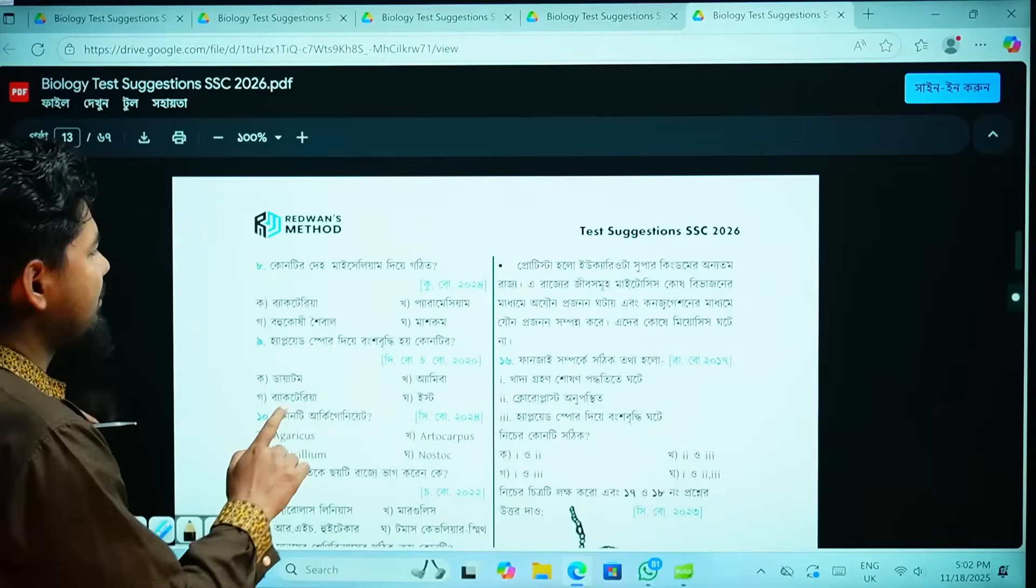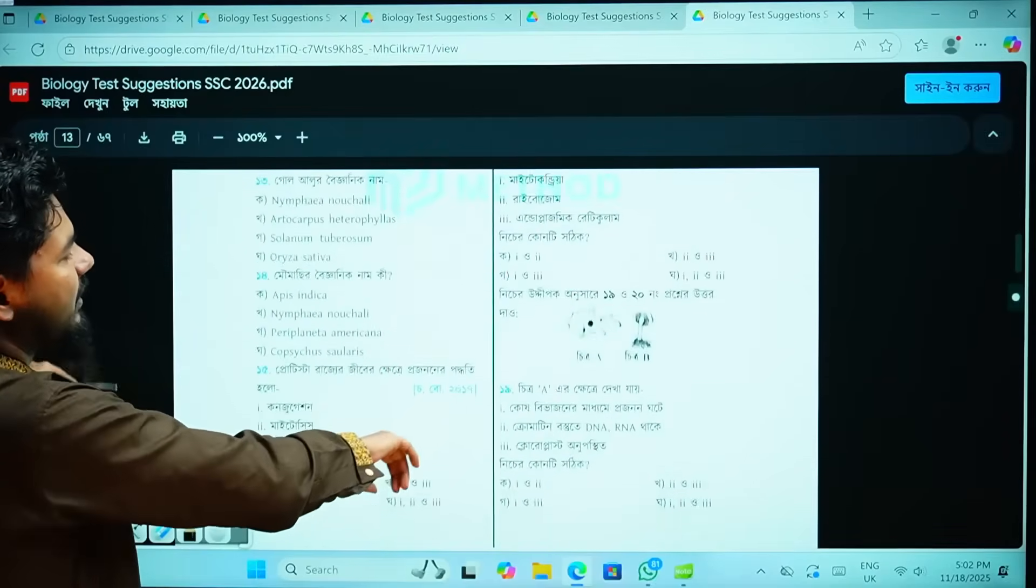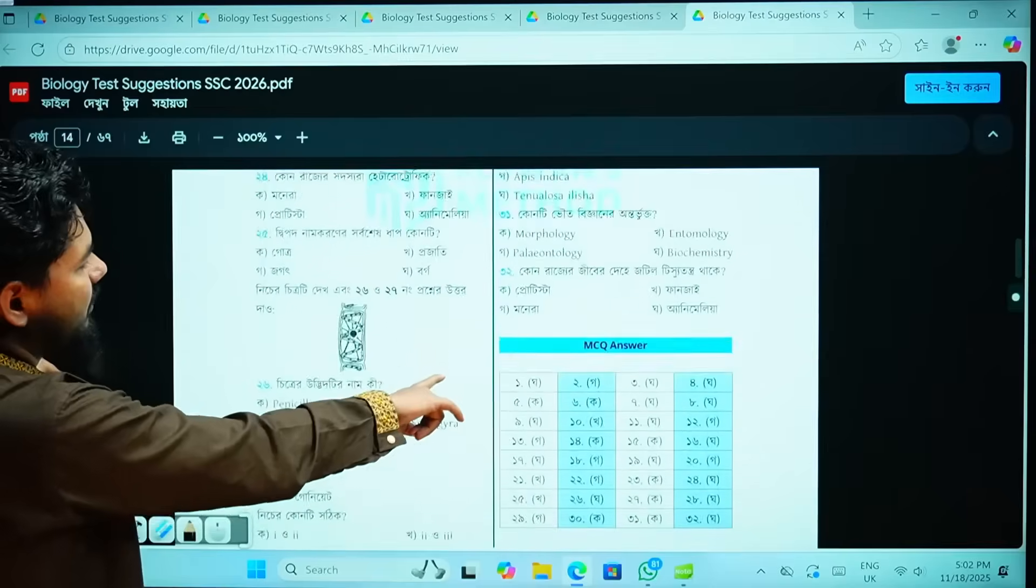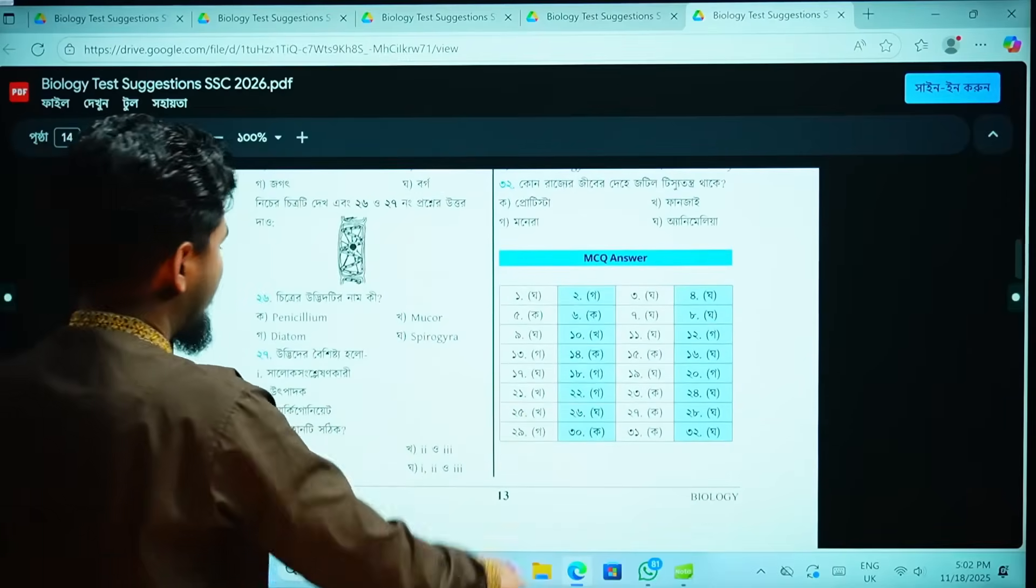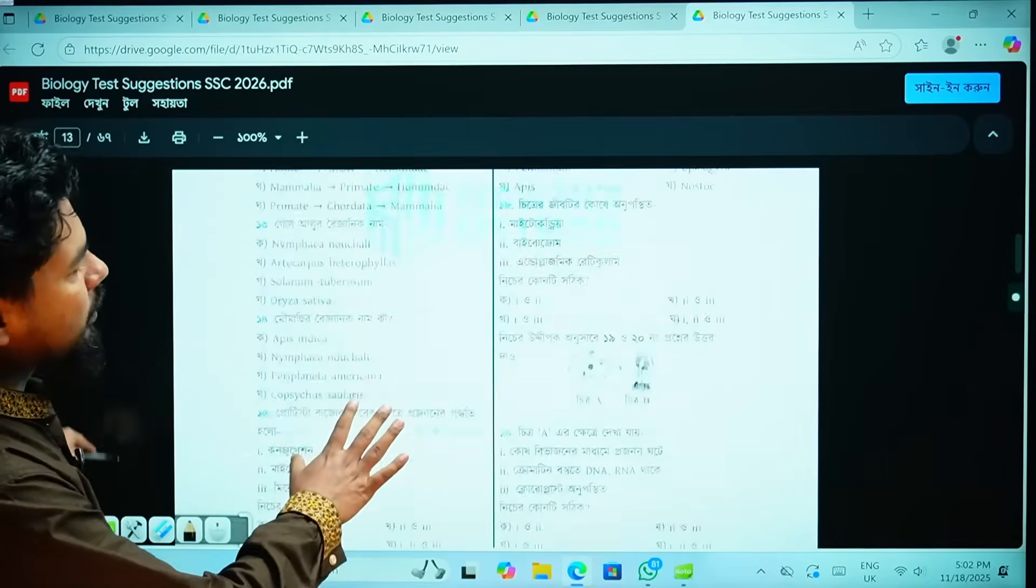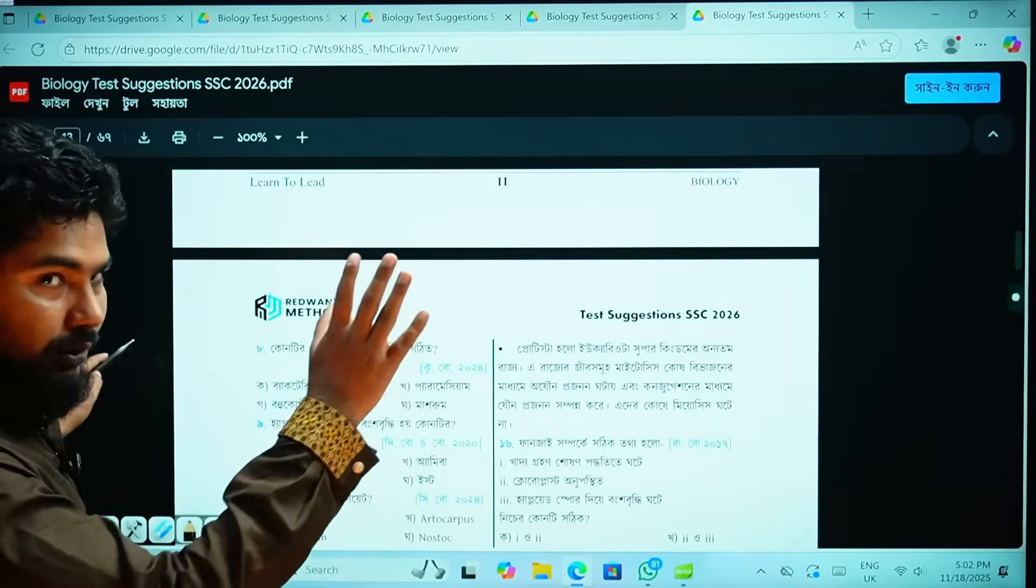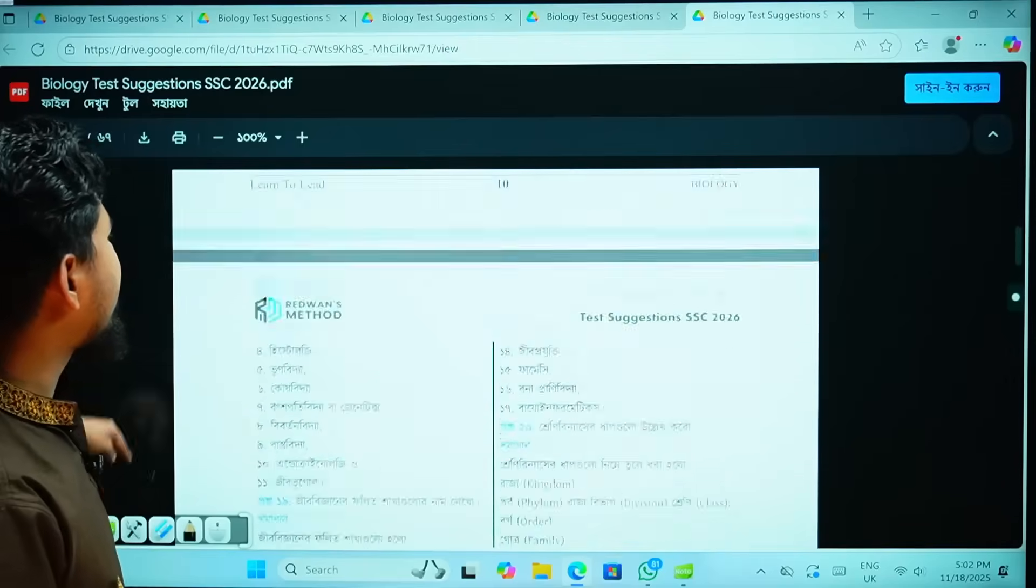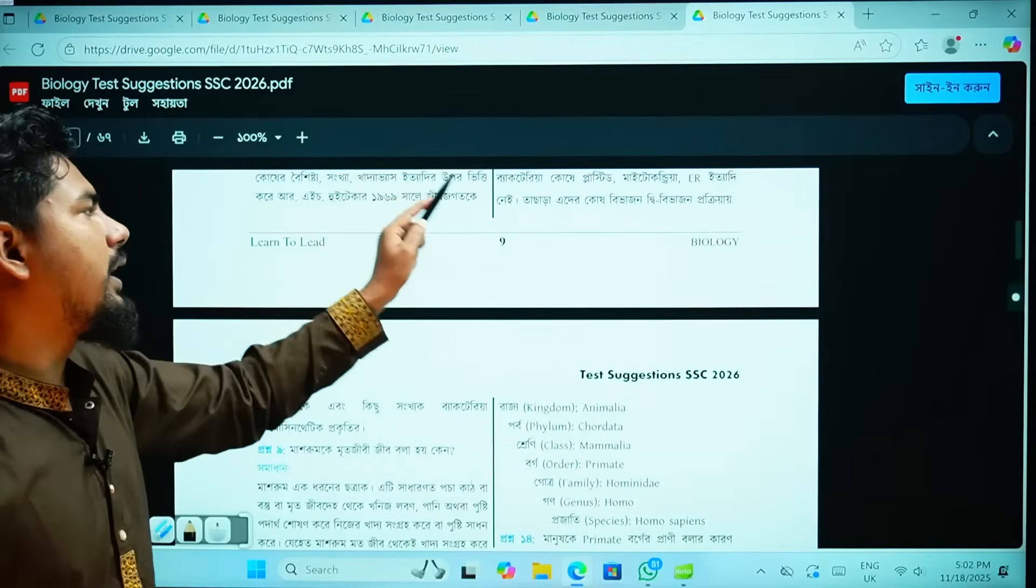See side by side, MCQs are given, each chapter is based. Here are 32 MCQs from the first chapter. If you can solve these MCQs with understanding, then the answers are also given and the short questions are given and the creative questions are given with the answers.